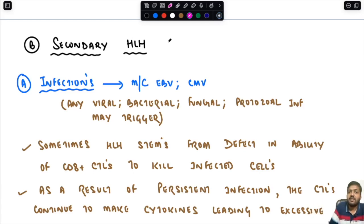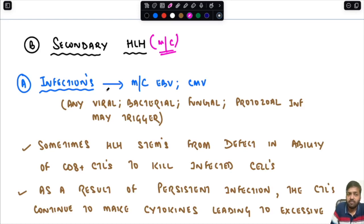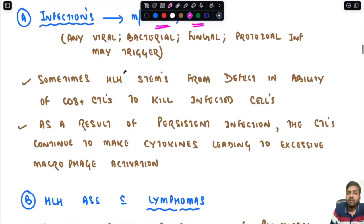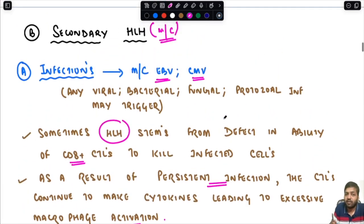The second variety of primary HLH is associated with immunodeficiency syndromes like Chediak-Higashi syndrome or X-linked lymphoproliferative disorder type 1. Secondary HLH is more commonly encountered in day-to-day life. The most important secondary variety is infections — most commonly Epstein-Barr virus infection, followed by cytomegalovirus. Any viral, bacterial, fungal, or protozoal infection may trigger this syndrome, but EBV and CMV are most commonly implicated.